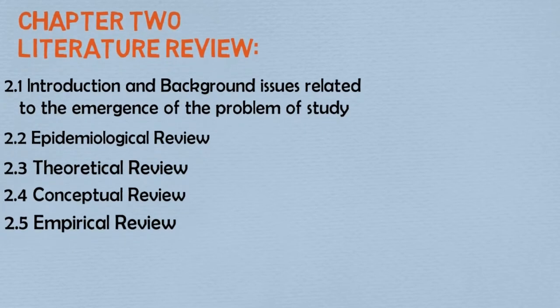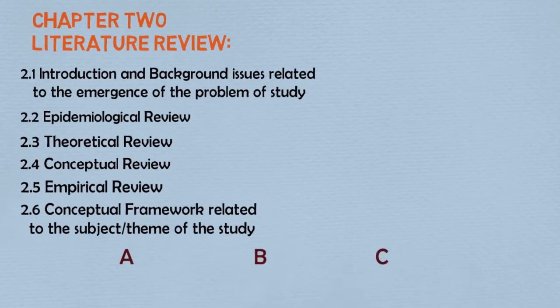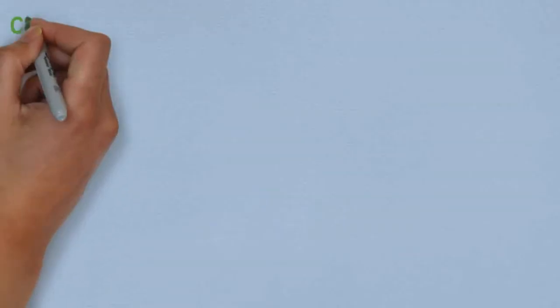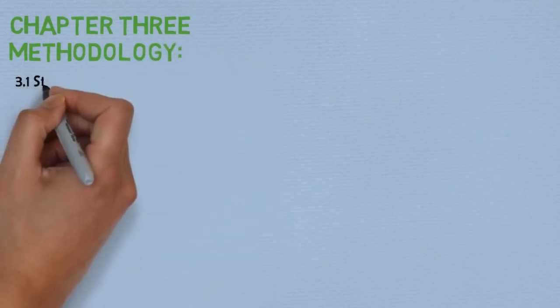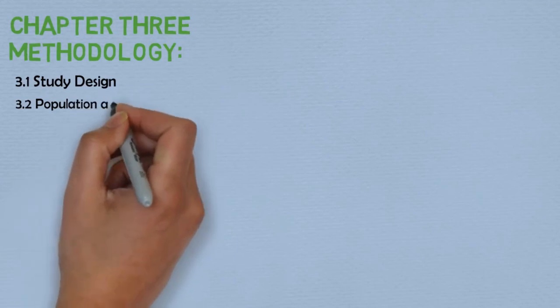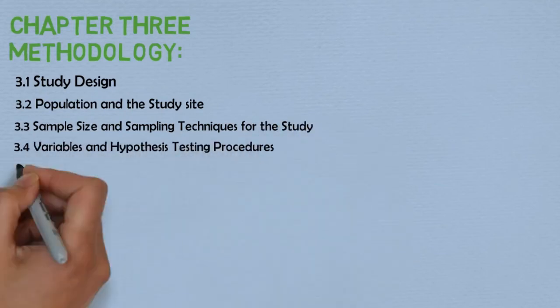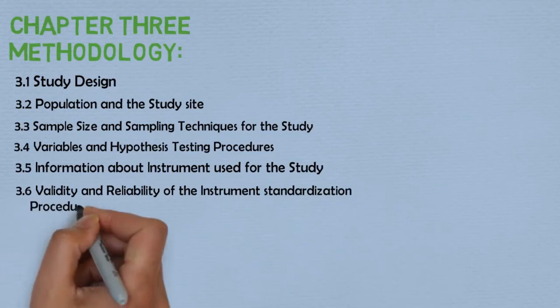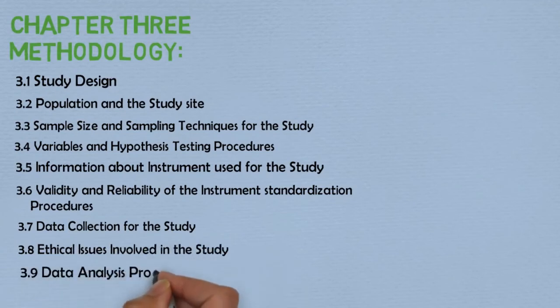Finally, under the literature review, you can include a conceptual framework related to the subject and theme of the study. An example is the ABC conceptual framework, where A stands for antecedents, B stands for behavior, and C stands for consequences or outcome. Chapter 3 contains the methodology. In developing the methodology, give details about the study design, population and study sites, sample size and sampling technique, variables and hypothesis testing procedures, instruments used including validity and reliability, standardization procedures, data collection, ethical issues, and data analysis procedures.